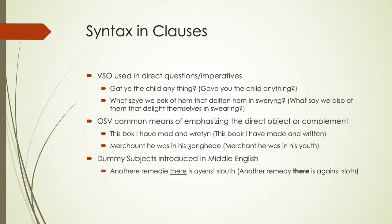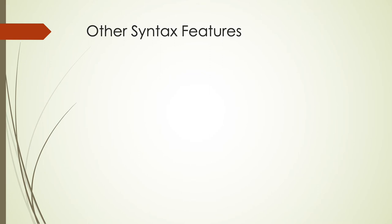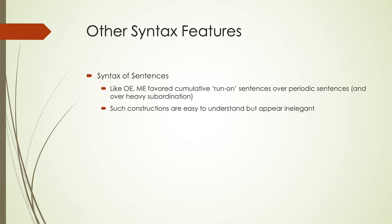We also see the introduction of dummy subjects in Middle English — 'another remedy there is against sloth' — rather than restructuring the whole sentence. These become very common in everyday language today but start appearing during Middle English. Additionally, Middle English, like Old English, favored cumulative run-on sentences rather than periodic independent sentences. We still see lots of run-on sentences where multiple clauses run together, which appear inelegant to us today because we're used to one main verb per sentence followed by a period.